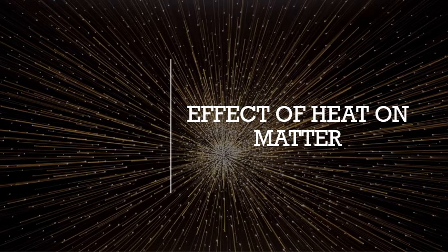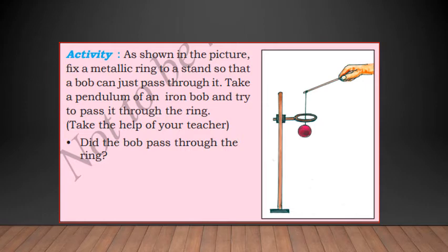Next we are going to see what is the effect of heat on matter. When we heat any kind of matter, what happens to that matter? There is one activity. As shown in the picture, fix a metallic ring to the stand so that the bob can pass through it. The bob is the ball which is hanging with the thread to the stick. Fix the metallic ring to the stand so that the bob can just pass through it. Take a pendulum of the iron rod and try to pass it through the ring.